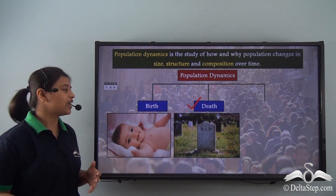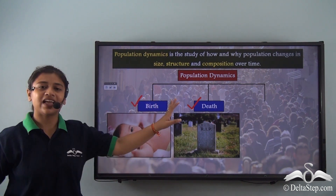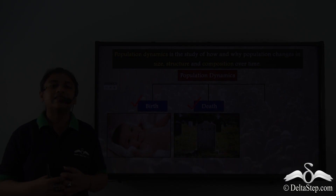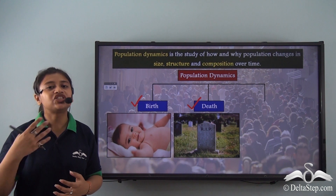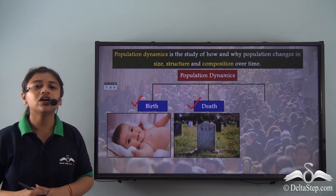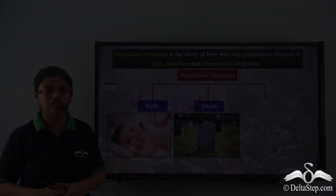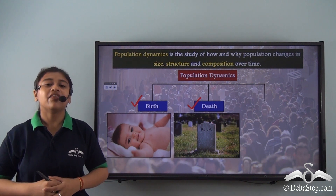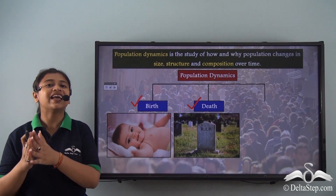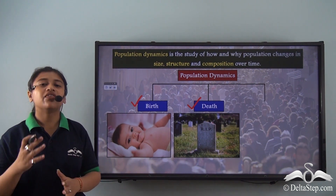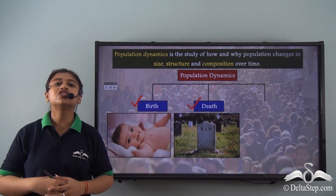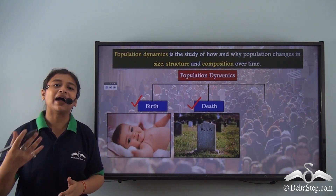So birth and death are important factors or determinants that lead to the change in the size, structure, and composition of a population. However, population dynamics does not only include births and deaths — it also includes migration.